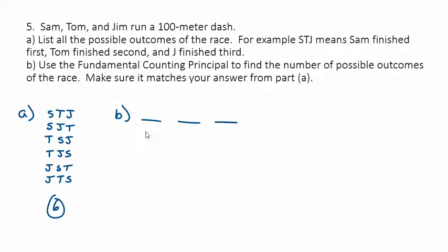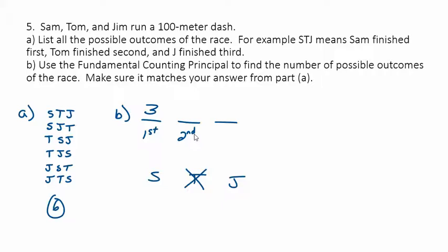Using the fundamental counting principle, I look at all my possibilities and ask: how many possibilities are there for finishing first? Three guys could finish first. One of them finishes first — let's say Tom. He's done. Now I've got two guys left to finish second. Let's say Jim. Jim's finished. For third place, I've only got one possibility. Multiply these together and I get six possibilities.